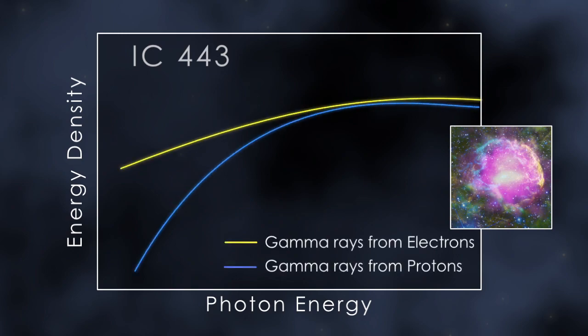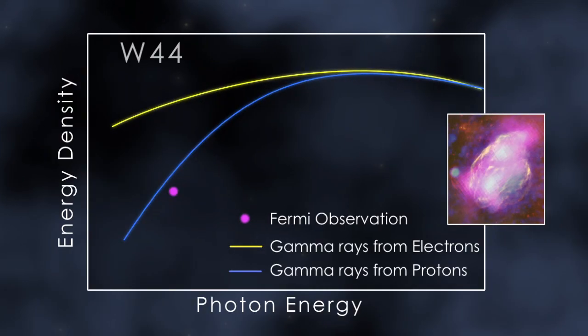Now, Fermi observations have done just that. They conclusively show these supernova remnants are accelerating protons. When they strike protons in nearby molecular clouds, they produce pions and ultimately, the gamma ray emission Fermi sees.